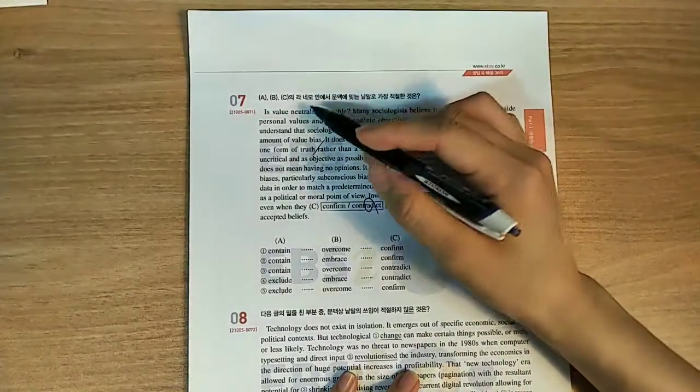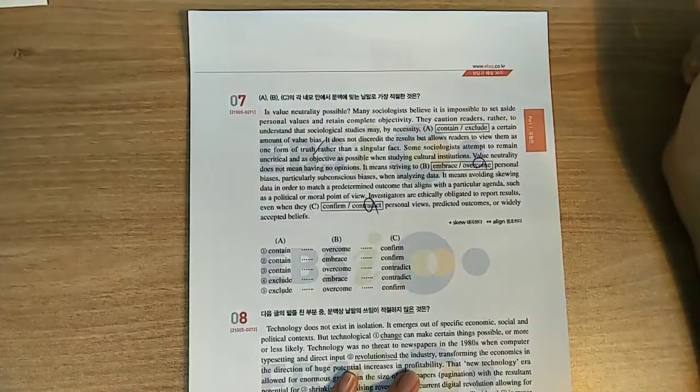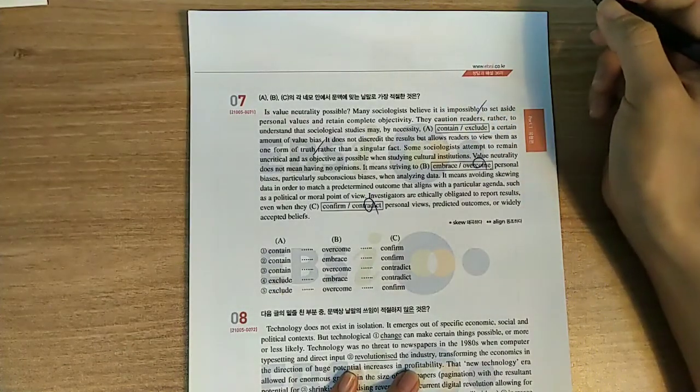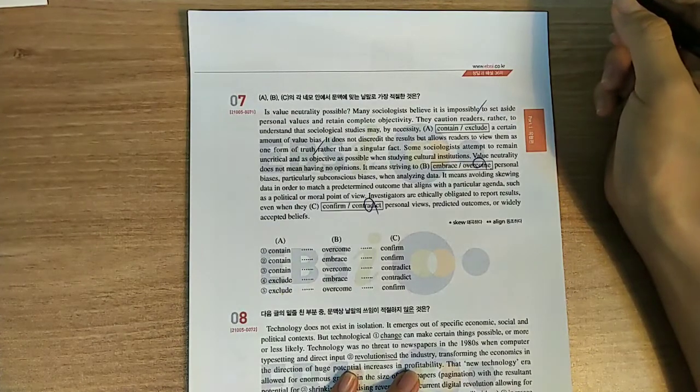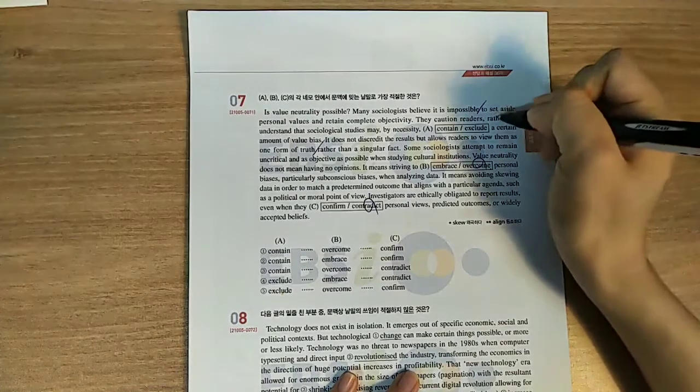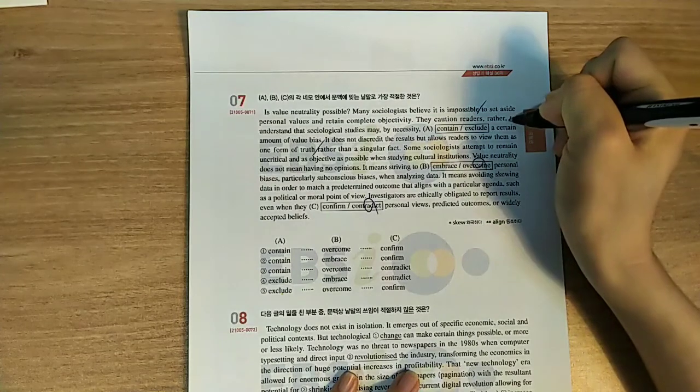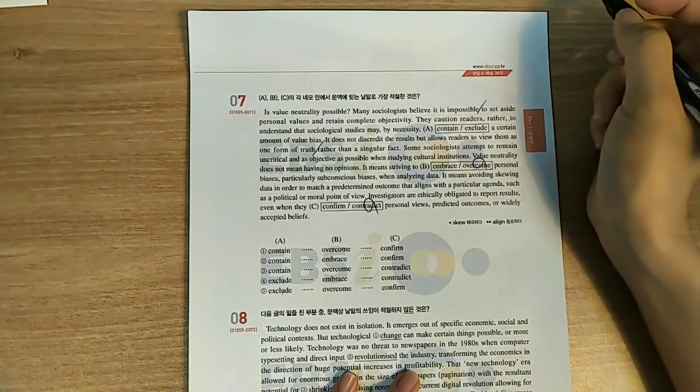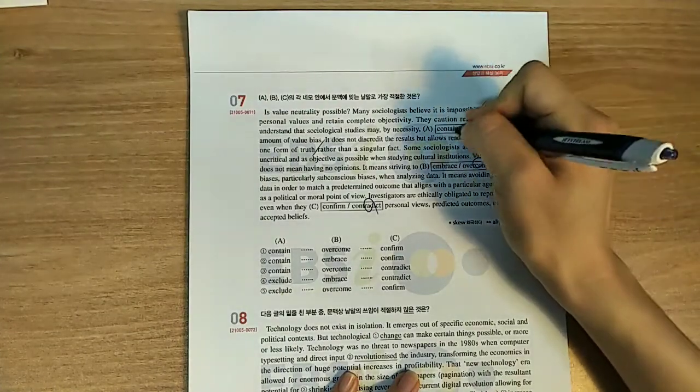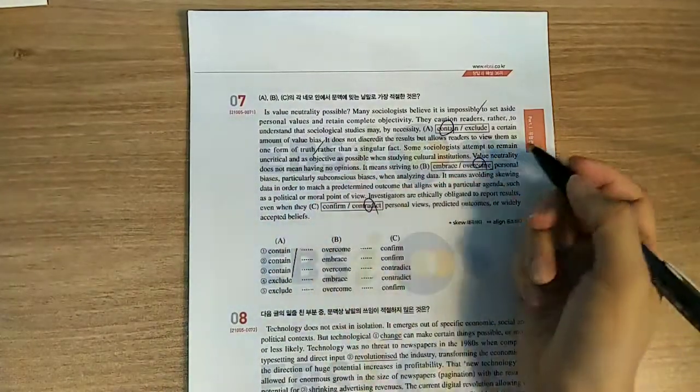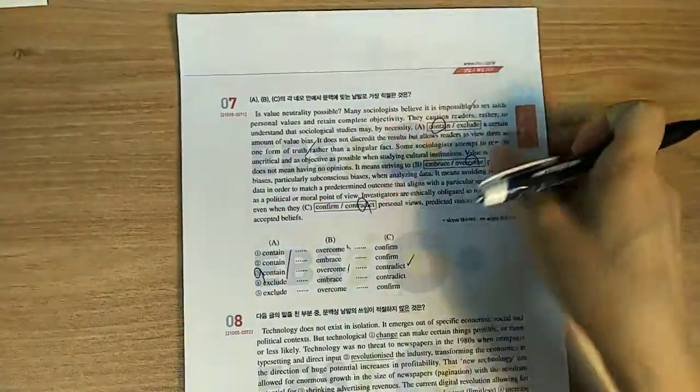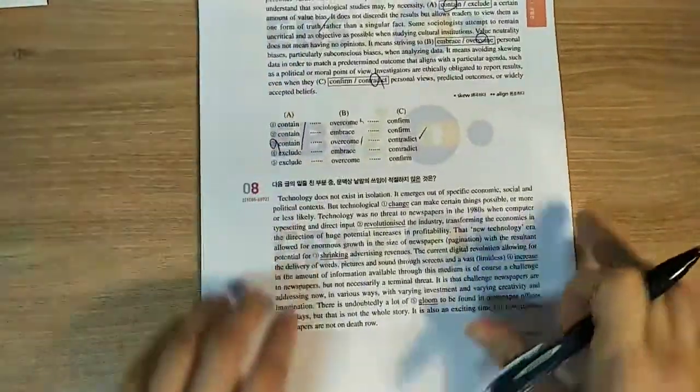Is value neutrality possible? Many sociologists believe it is impossible to set aside personal values and retain complete objectivity. They caution readers, rather, to understand that sociological studies may contain a certain amount of value bias. Contain, overcome, and contradict.